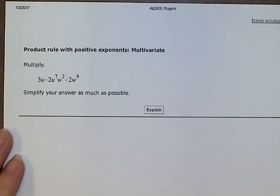Product rule with positive exponents, multivariate. Multiply 3u times 2u to the 7th w to the 2nd times 2w to the 9th. Simplify your answer as much as possible.